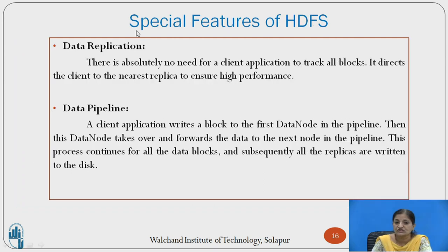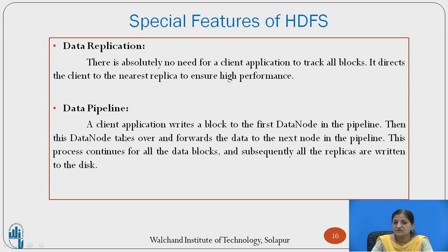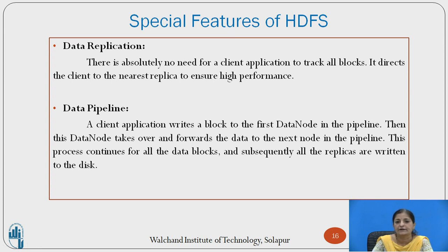The special features of HDFS: there is absolutely no need for a client application to track all the blocks. HDFS directs the client to the nearest replica to ensure high performance. Data replication is done automatically by HDFS without burdening the client application. Regarding data pipeline: a client application writes a block to the first data node in the pipeline. That data node then forwards the data to the next node in the pipeline. This process continues until all the data blocks and subsequently all the replicas are written to disk.